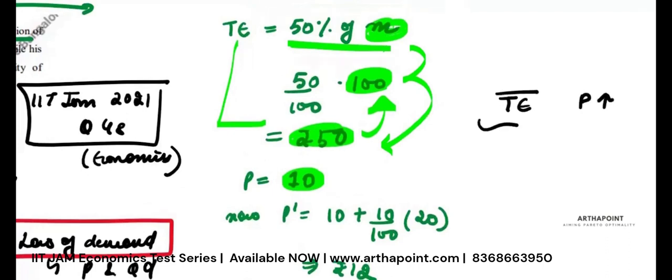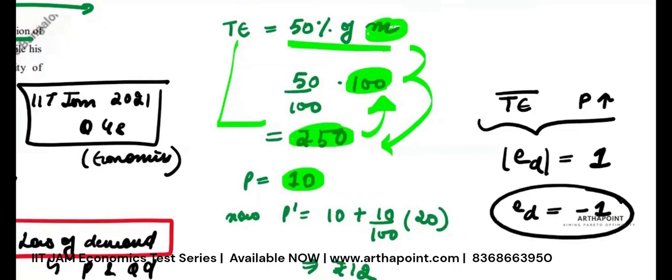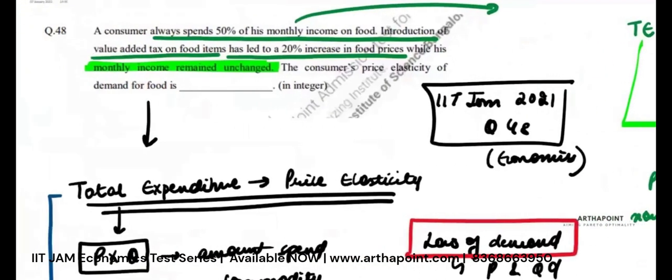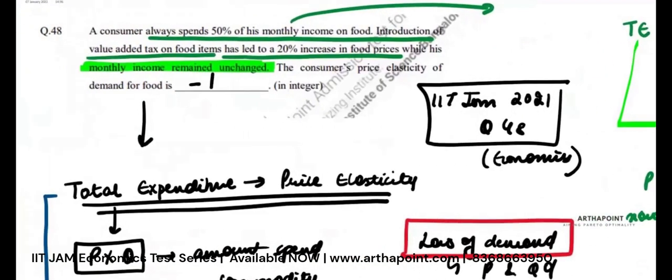Price of food has increased. What will be the elasticity of demand? In absolute terms, 1. Otherwise, due to the law of demand, because it is negative, minus 1. So the elasticity of demand is minus 1. The answer is minus 1.